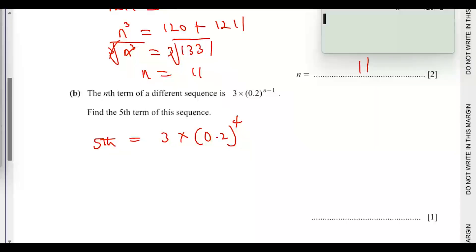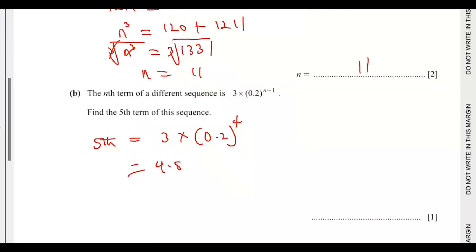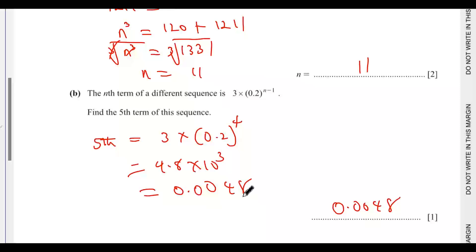You can easily input this into your calculator: 3 multiplied by, open bracket, 0.2, close bracket, to the power of 4, then hit enter. You get a fraction — converting to decimal that is 4.8 times 10 to the power of negative 3, which equals 0.0048.